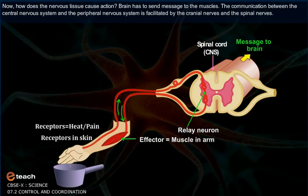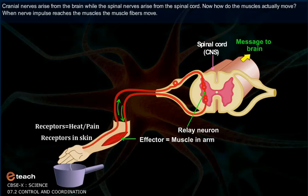The communication between the central nervous system and the peripheral nervous system is facilitated by cranial nerves and spinal nerves. Cranial nerves arise from the brain, while spinal nerves arise from the spinal cord.